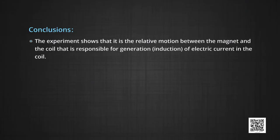We can conclude that it is the relative motion between the magnet and the coil that is responsible for the generation or induction of electric current in the coil.